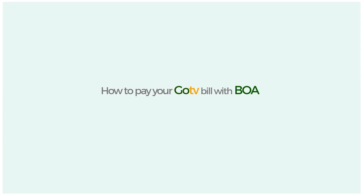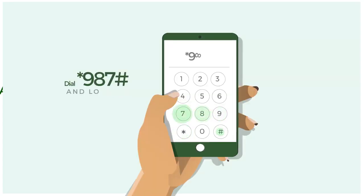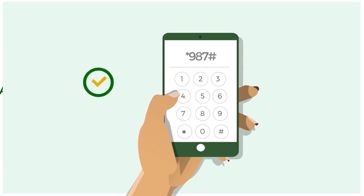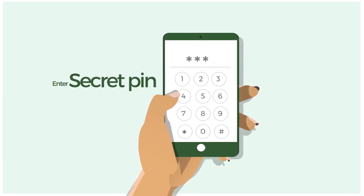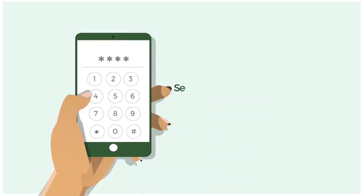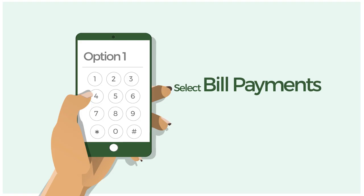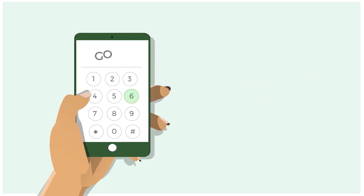How to pay your GoTV bill with Bank of Africa. Dial star 987 hash and log in. Enter your personal MPIN and select Bill Payments.